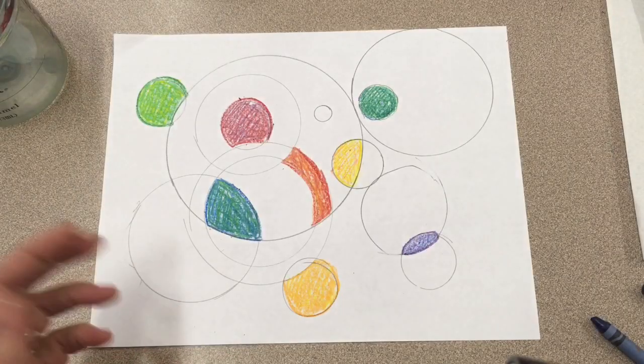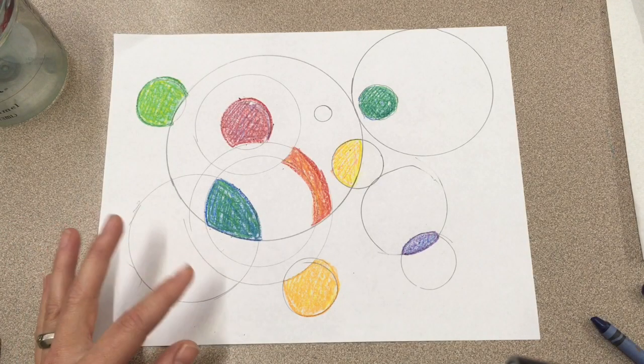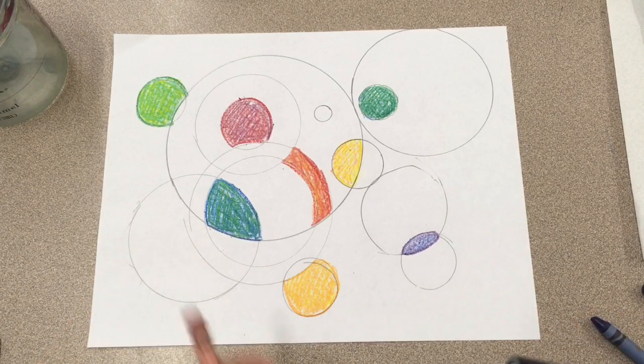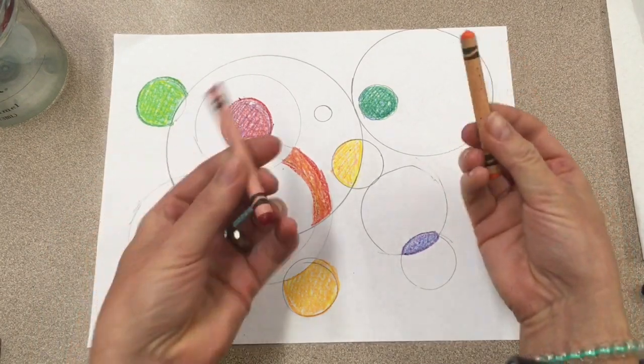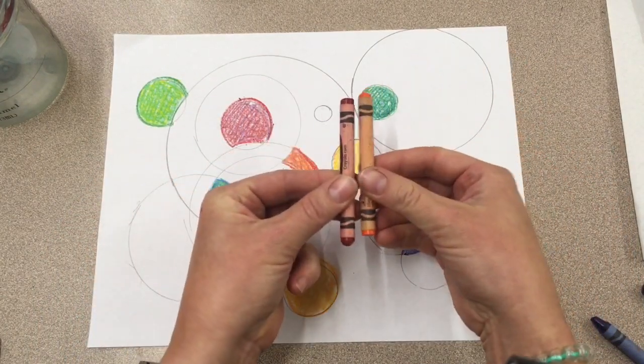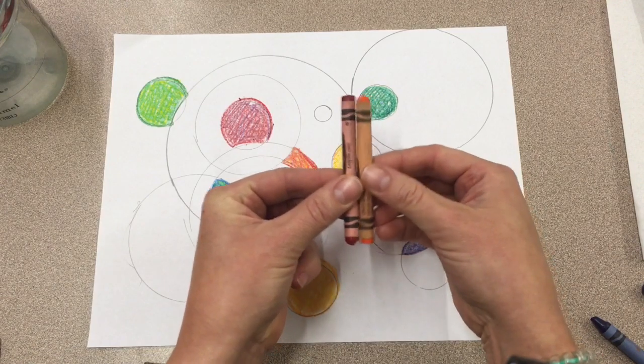Once your shapes are drawn, you can start adding color. I decided to use crayon and make the intermediate colors, which is when you take a primary color and put it next to or mix it with the secondary color next to it.